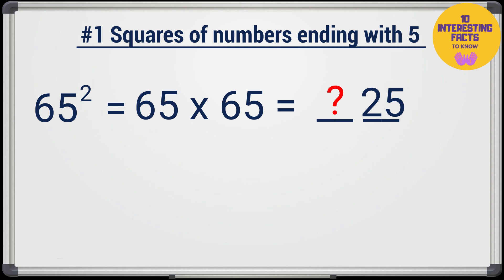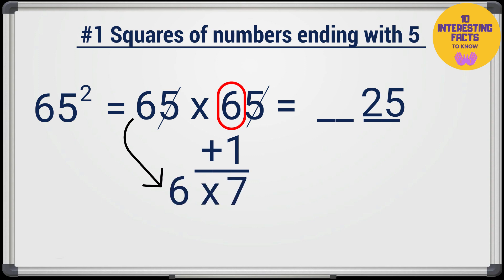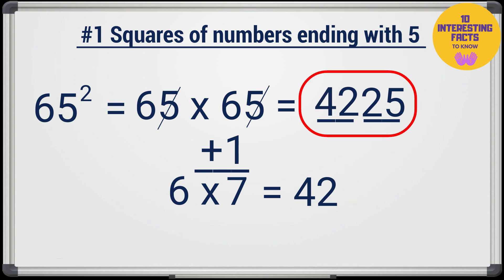Going back to the number 65, ignore the unit digit which is 5 and look at the remaining digits which in this case is 6. Add 1 to it which makes it 7. Now multiply 6 and 7 which gives 42. So we found out that the first part of the answer which is 42 and the final answer is 4,225.